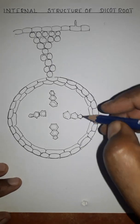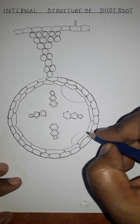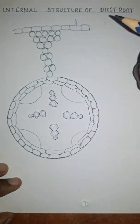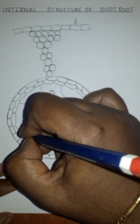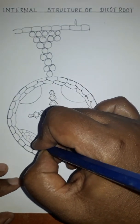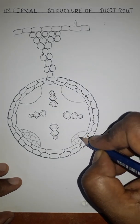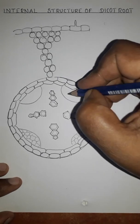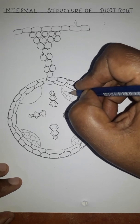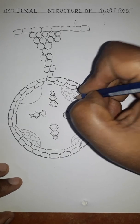In between the xylem we see the phloem cells. That means the xylem alternates with phloem, and that type of arrangement is called radial arrangement. Phloem cells are polygonal in shape — hexagon, pentagon, or rectangle. In some cases they are sclerenchymatous in nature because they are involved in secondary growth.